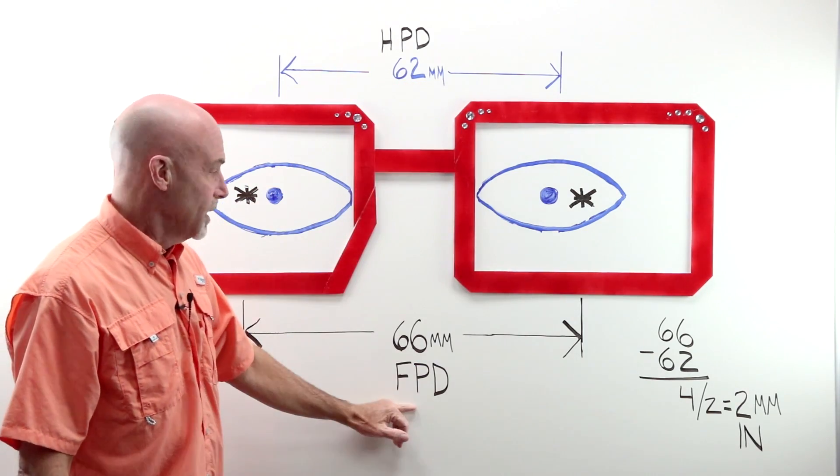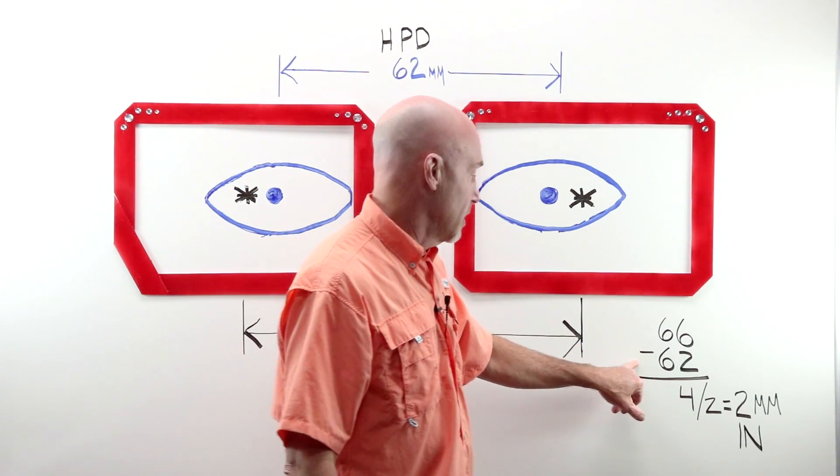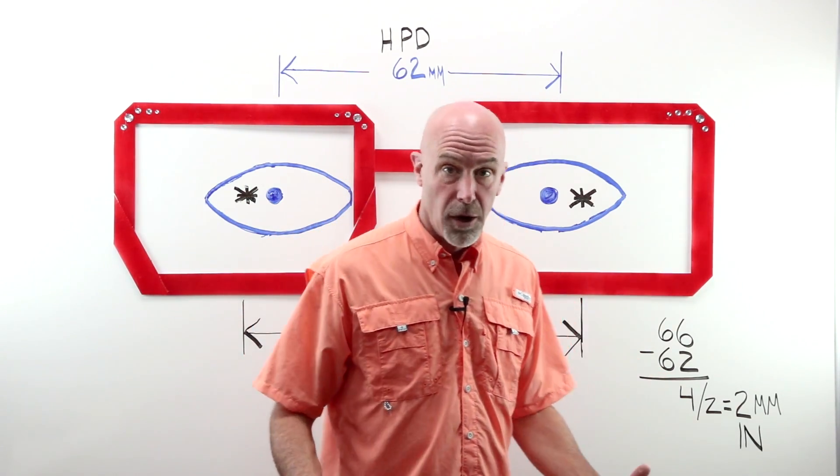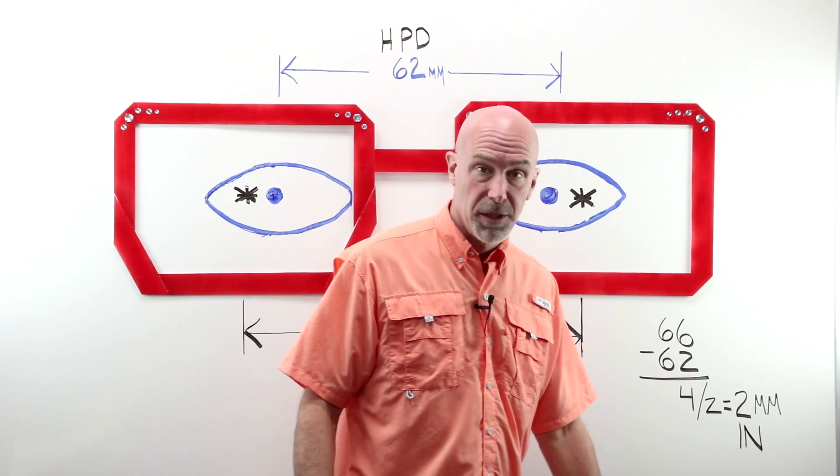62 is less than 66. If I have a frame PD of 66 and I take away my PD of 62, I have a difference of four. Four divided by two because I have two eyes, two millimeters.